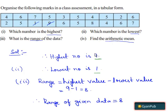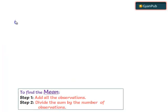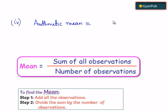Now let's move on to the fourth part. Here they have asked us to find the arithmetic mean. We can find the arithmetic mean by dividing the sum of all observations by the number of observations.